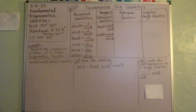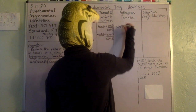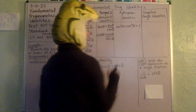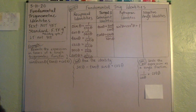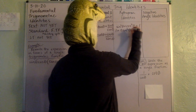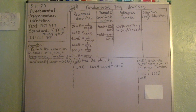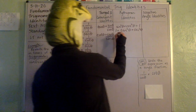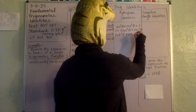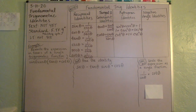Next we move on to our Pythagorean identities — there are three. The first and most common is sine squared theta plus cosine squared theta equals one. The next is one plus tangent squared theta equals secant squared theta. And the last is cotangent squared theta plus one equals cosecant squared theta.